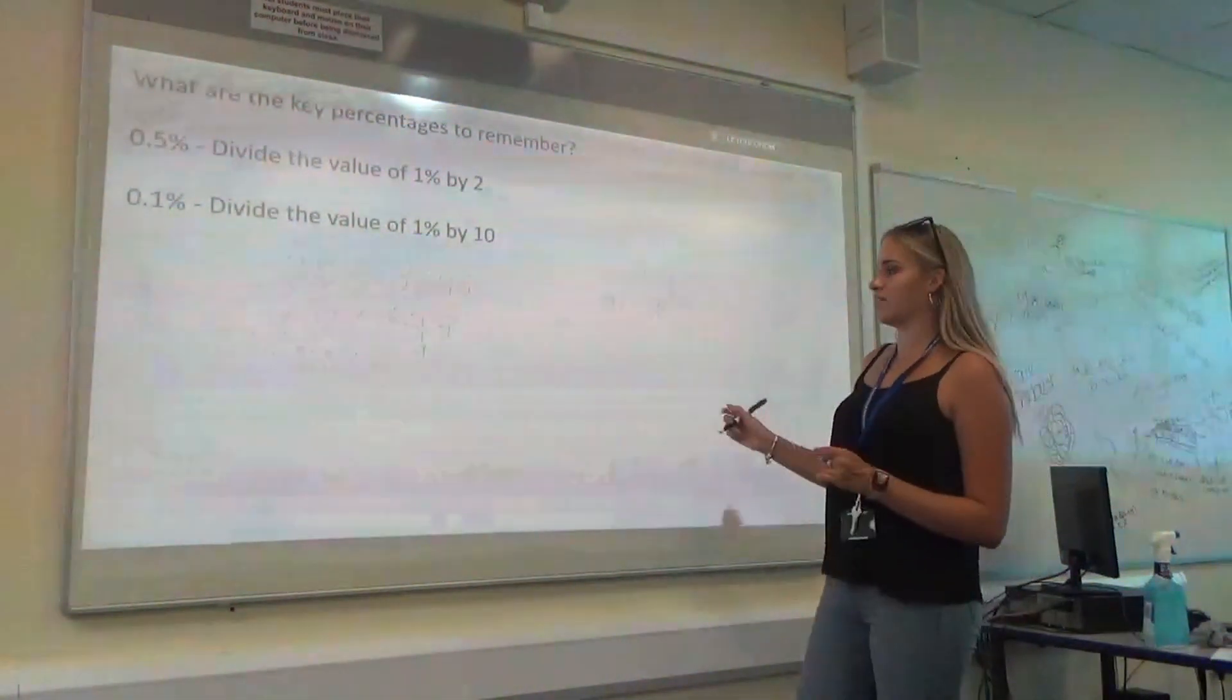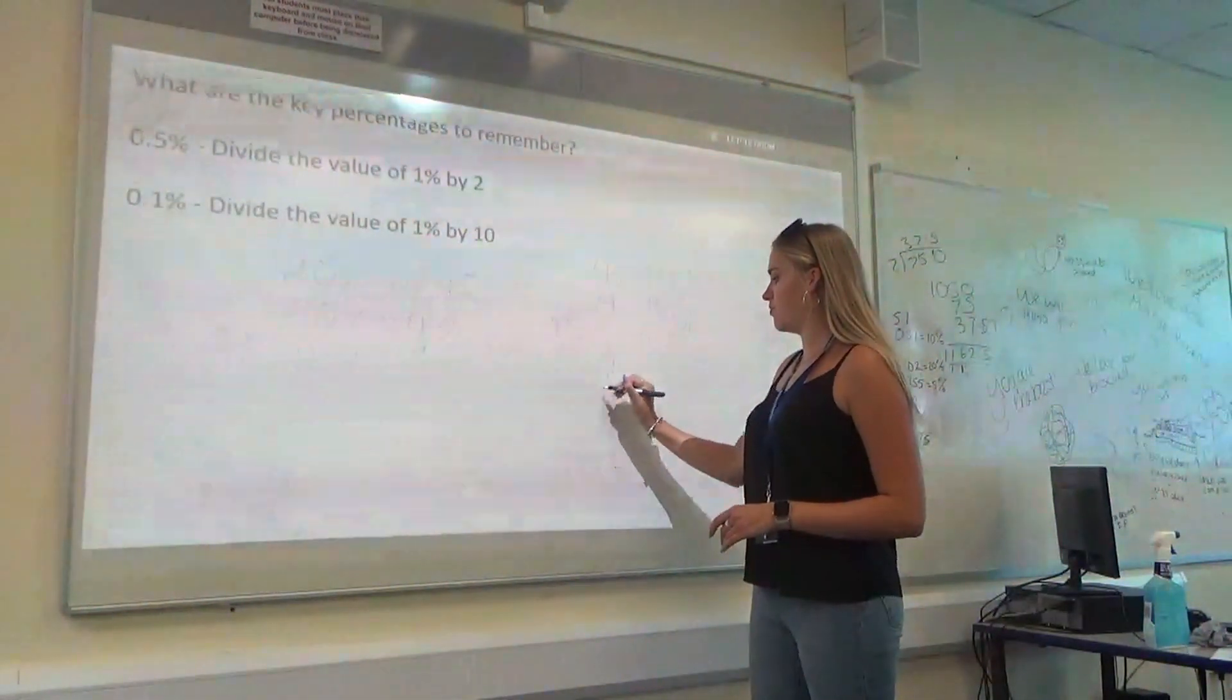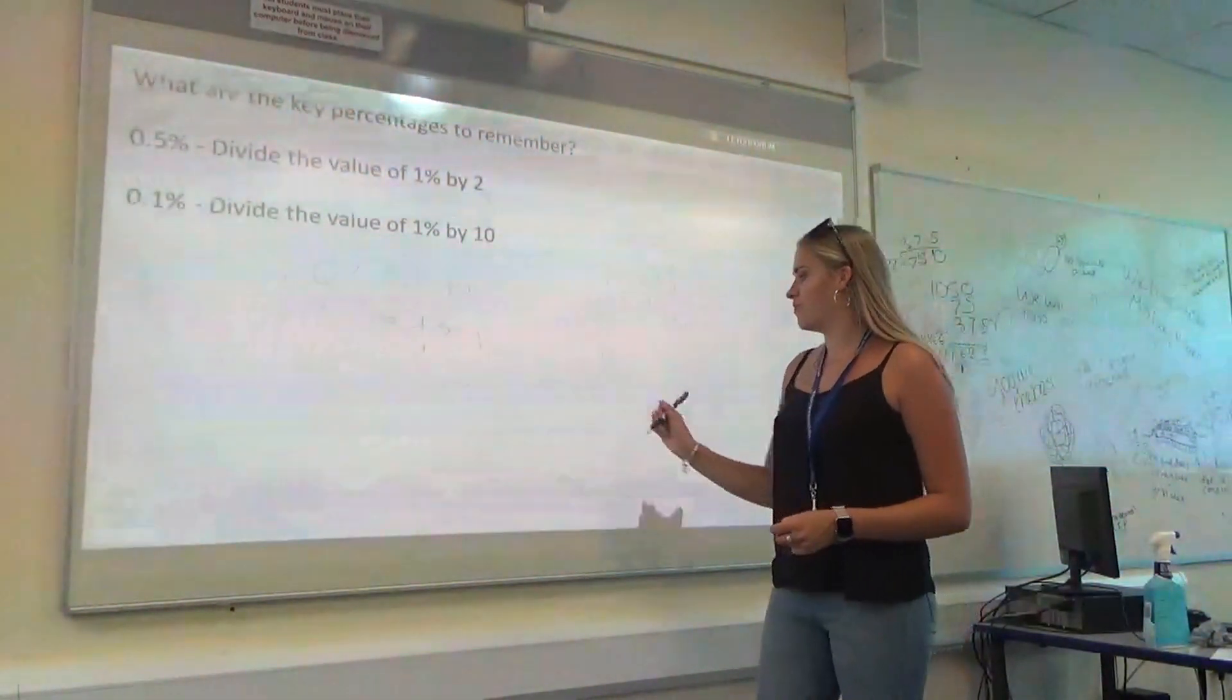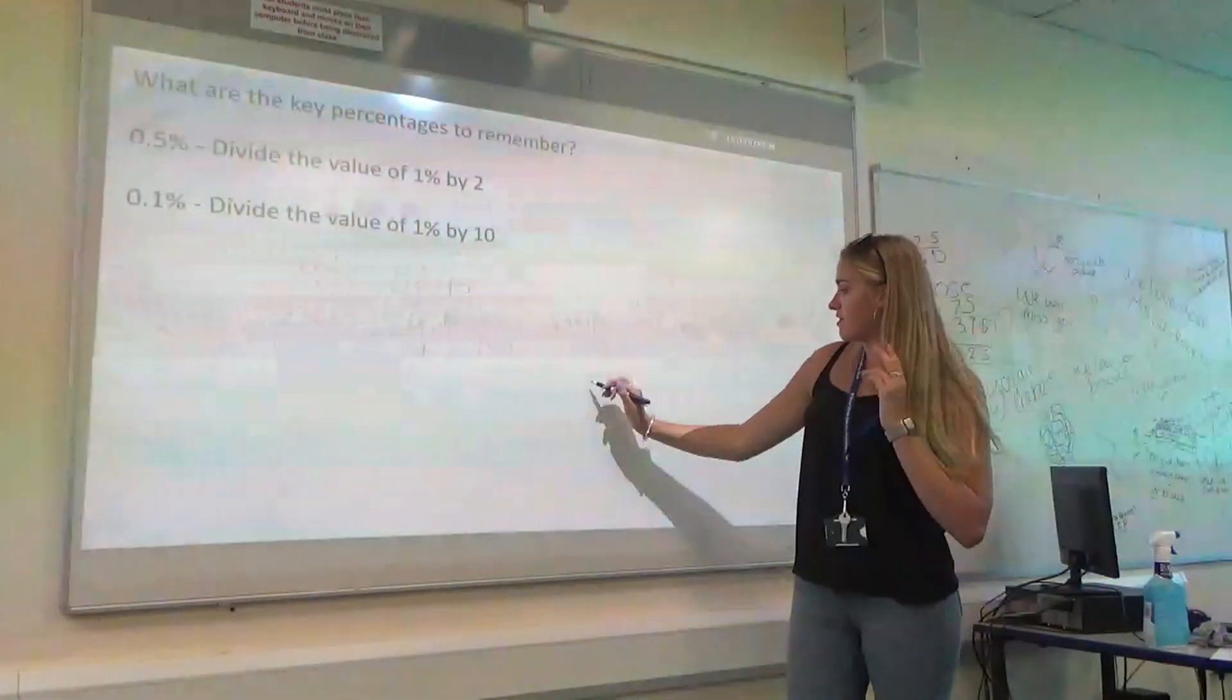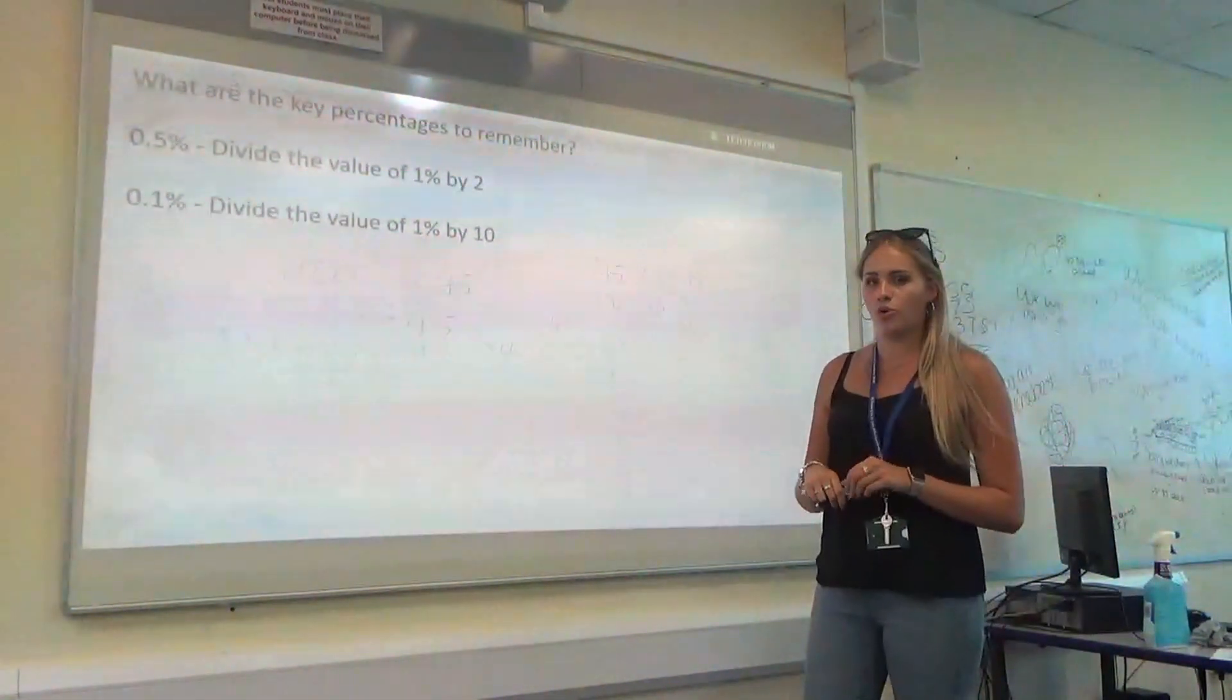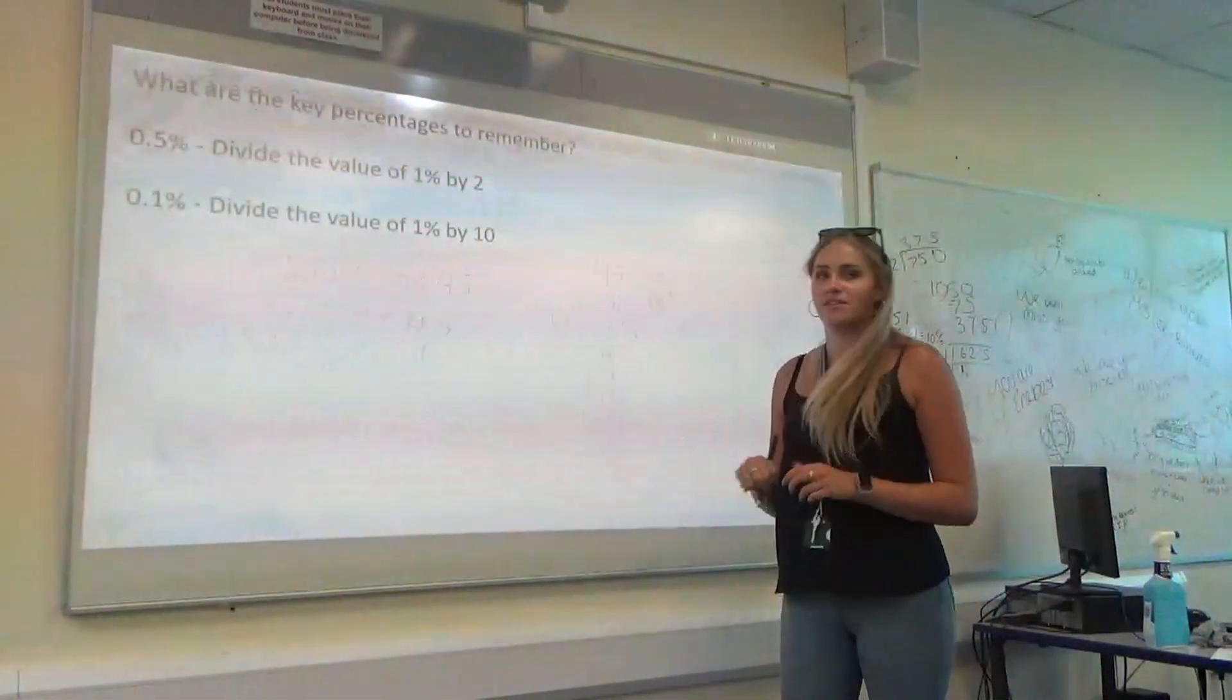Okay? You can't use a calculator. You will not have a calculator with this. So, you're going to have to do the column method. Or the grid method. Whatever you prefer. 8 times 4. We know is 32. Carry the 3. Put the 2 down. 1 times 4 is 4. Plus our 3. We get 7.